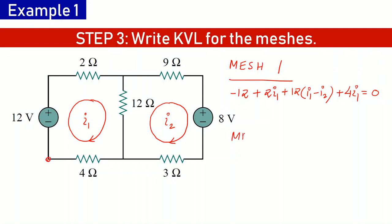Now writing the KVL equation for mesh 2, starting from a point and moving clockwise. First is the 9-ohm resistance — current through it is i2, along the direction of travel, so there is a fall in potential. We take it with a positive sign: 9 ohms times i2. Then we have the 8-volt source on the way — a fall in potential, so positive sign, value is 8 volts. For the 3-ohm resistance, current is i2, fall in potential, positive sign: 3 ohms times i2.